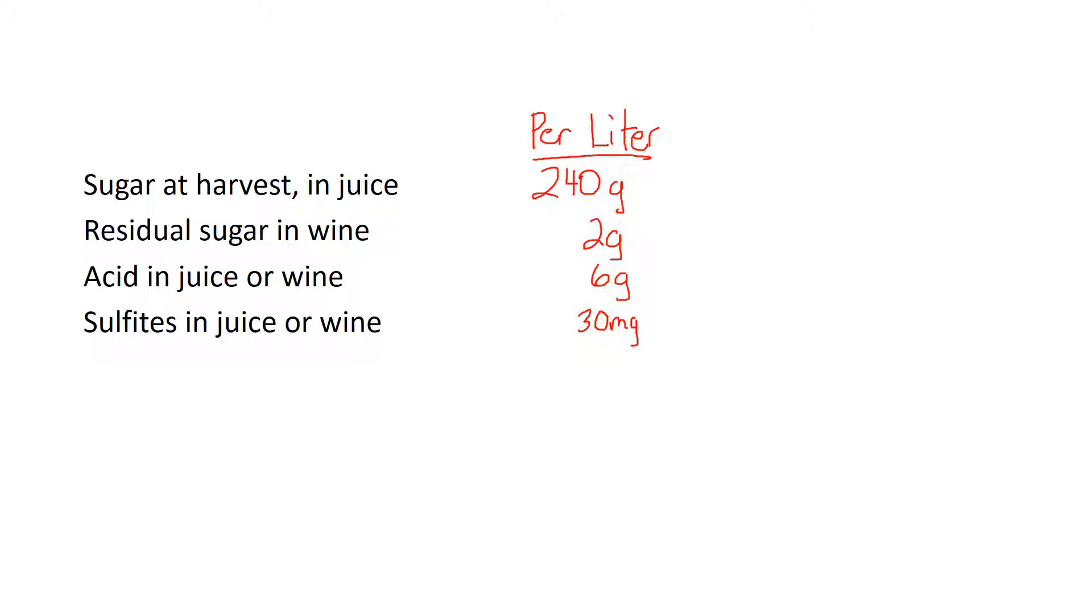So milligrams, that's one one-thousandth of a gram. So if we're talking about six grams of acid and only 30 grams of sulfites, sulfites are obviously a lot lower.